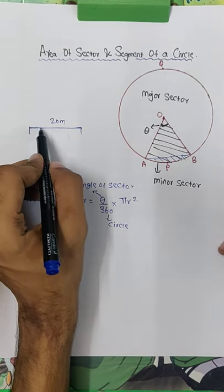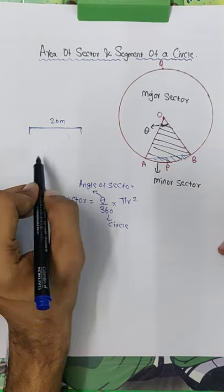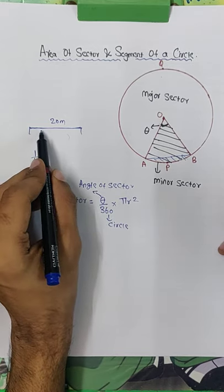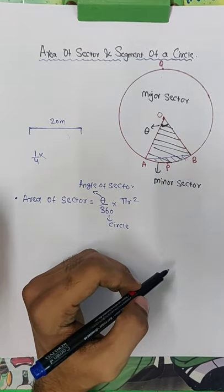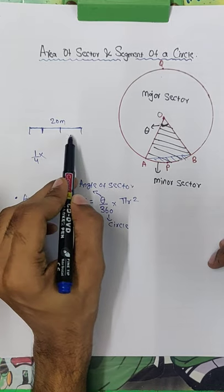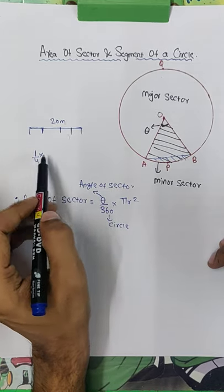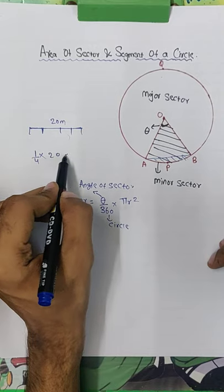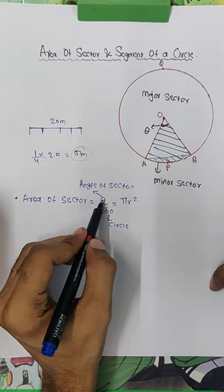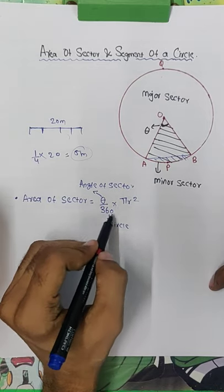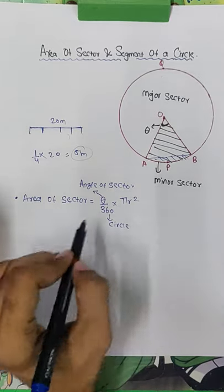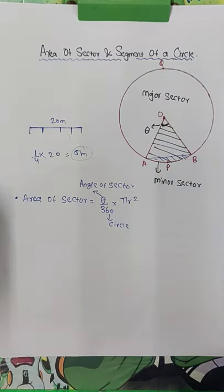If I divide the wire into 4 parts, one part would be one-fourth times 20, which is 5 meters. Same thing we do here. The length we have upon the total 360 degrees, into the full circle area pi r square. This is how we find the area of sector.